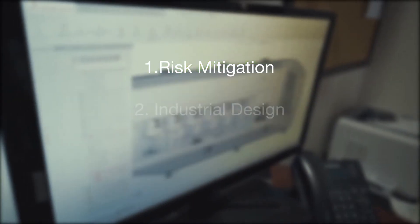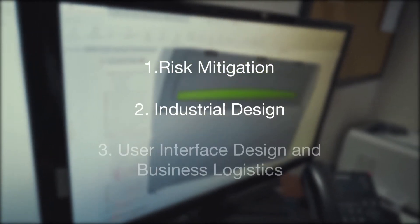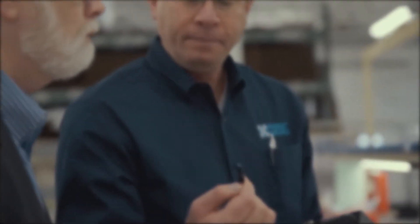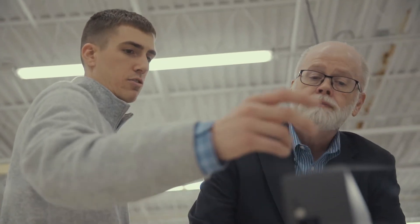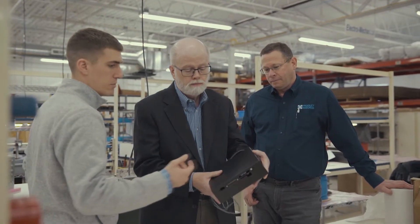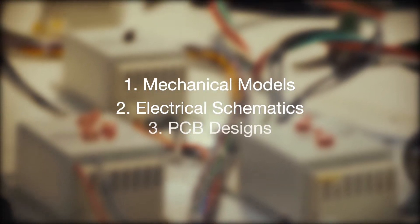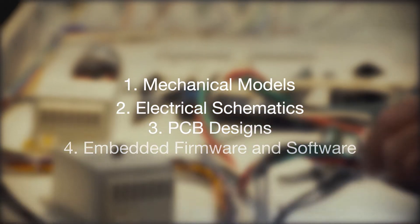We can then move on to the industrial design and the user interface design. This is a pivotal time for customers because they can finally see how their product will look and how it will interact with the user. Designs may be represented through mechanical models, electrical schematics, PCB designs, embedded firmware and software.